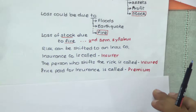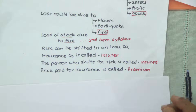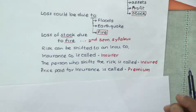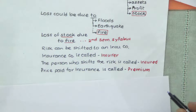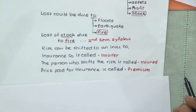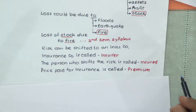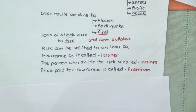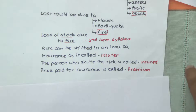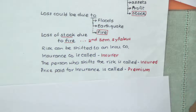The insurance company is going to give this service for a price. That price is called premium. This premium is paid on a periodical basis — it could be monthly, quarterly, half-yearly, or yearly. So as long as the premium is paid, the policy is live and things keep going on.